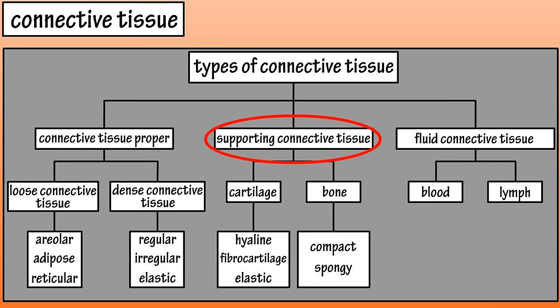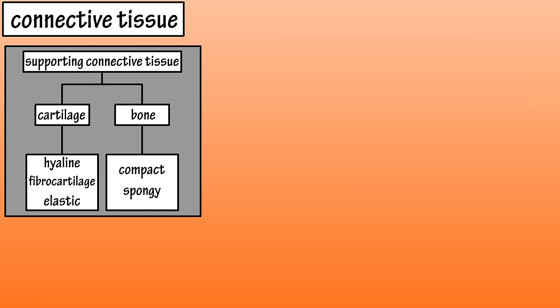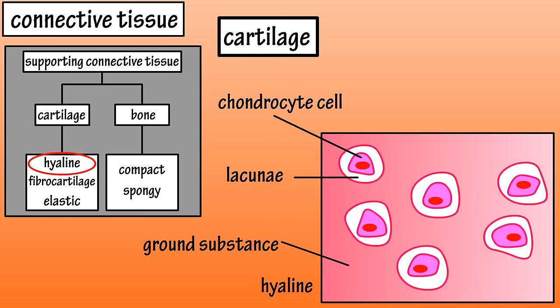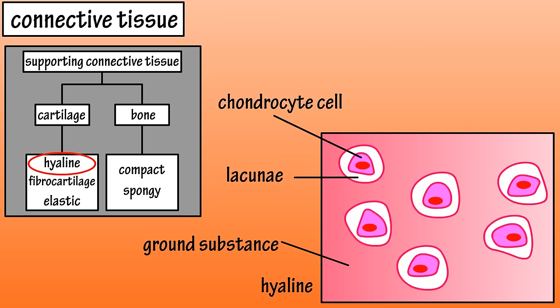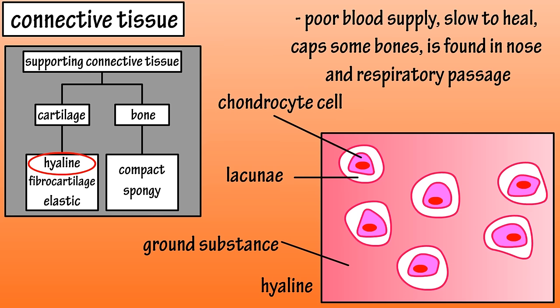The second classification of connective tissues is supporting connective tissue, which has two subgroups: cartilage and bone, with cartilage having a semi-solid matrix and bone having a solid matrix. There are three main types of cartilage. Hyaline cartilage consists of chondrocyte cells, which support and repair the cartilage matrix, and these cells occupy small spaces called lacunae and are scattered throughout the matrix. It has a poor blood supply, causing injuries to heal slowly, and sometimes not at all.